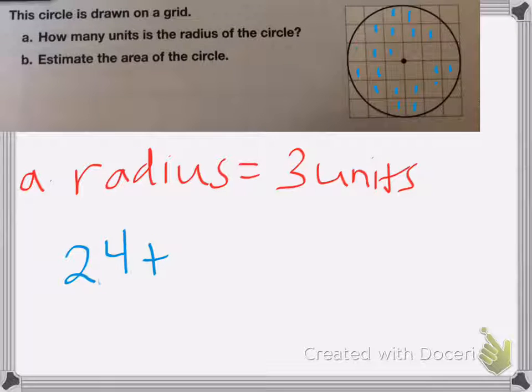Now I need to add up the half units so I can get close. So the ones that are half, I have 1, 2, 3, 4, 5, 6, 7, 8. So if I have 8 half units, that's the same as 4 whole units. I'm going to add another 4 units. So 24 plus 4 is equal to 28.